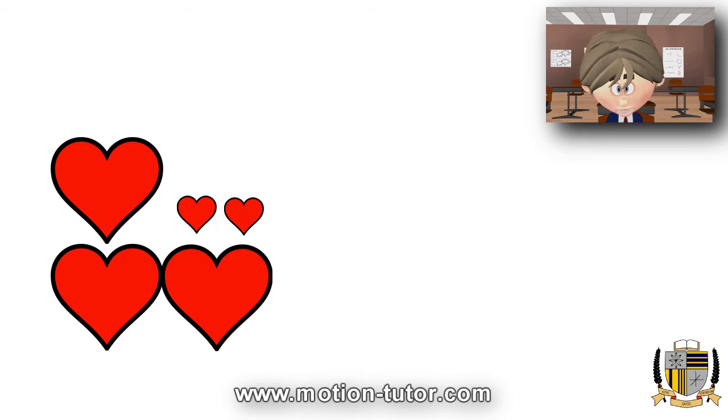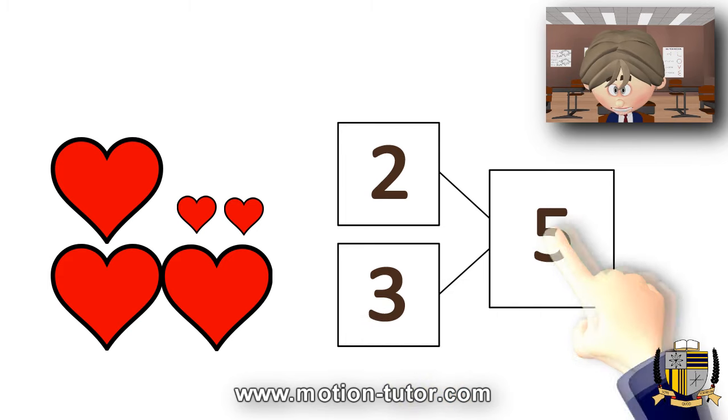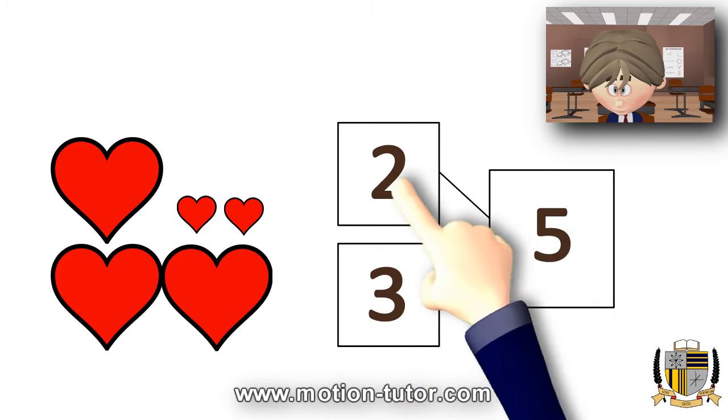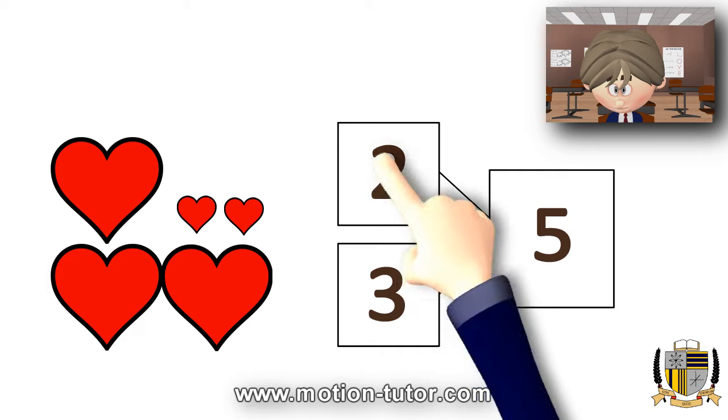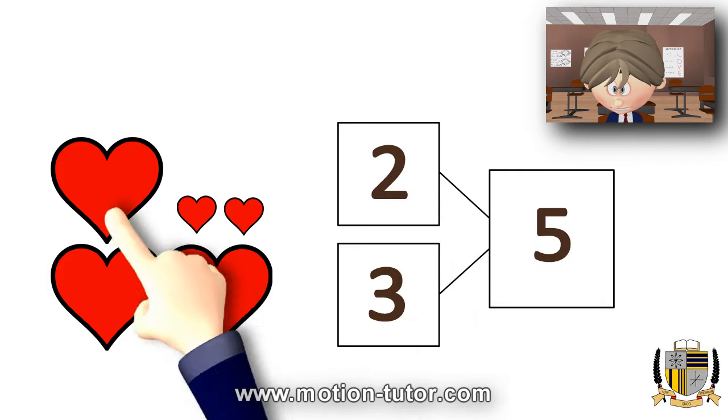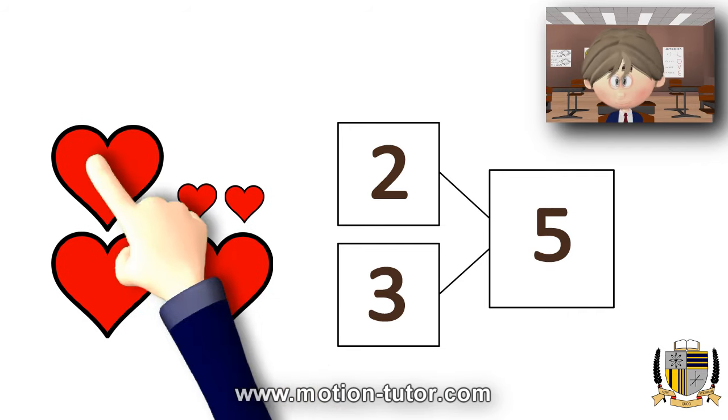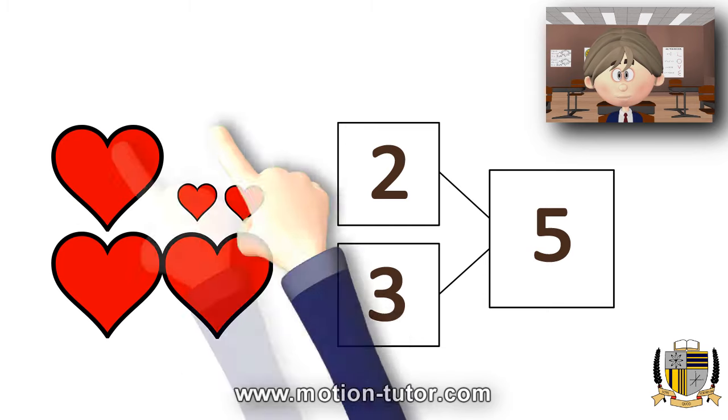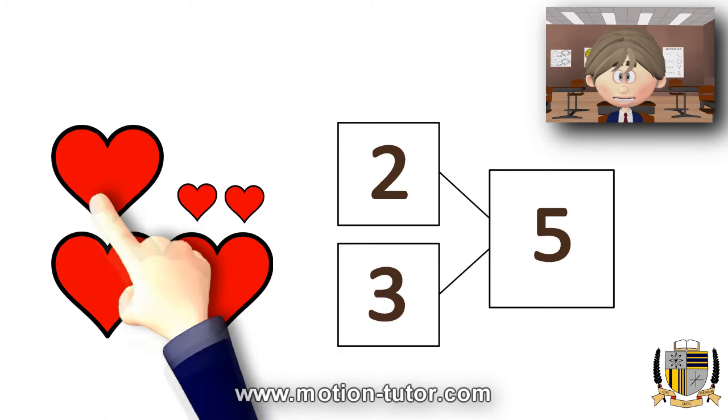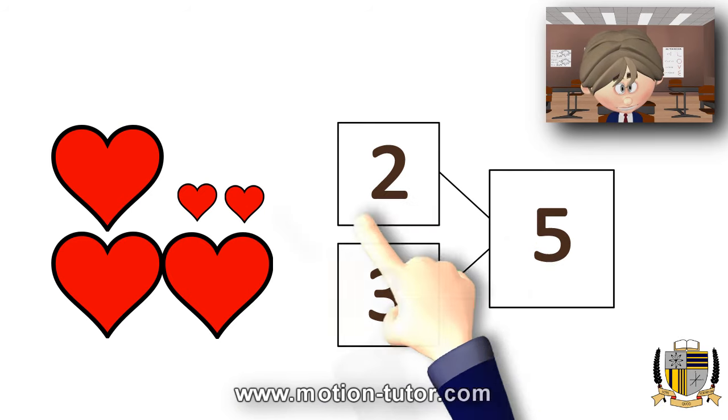So let's see a number bond that illustrates that. Looking at this number bond, we see how five can be made up of two and three. These two and three together make this five. And here is the image that illustrates that. Five hearts together, three big ones, two small ones, and here's the number bond to represent them.